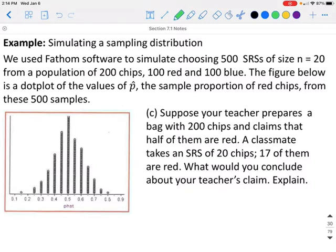It is very unlikely to obtain a simple random sample of 20 chips and have our probability of getting a red chip, in this case with 17 out of 20, which is 85% of those. It would be very hard to get 85% being red if the population has 200 chips and half of them are actually red. This student's result gives us strong evidence against the teacher's claim.